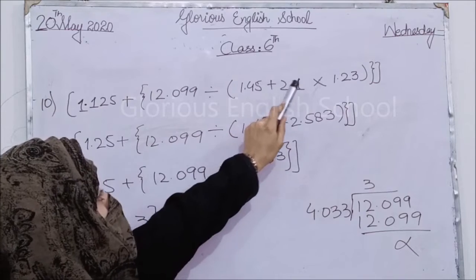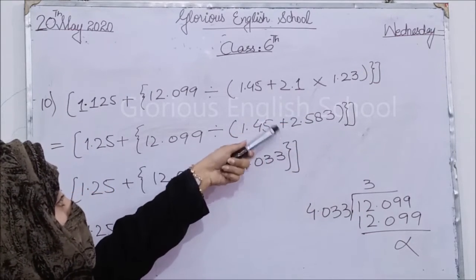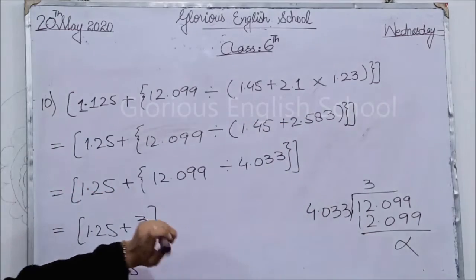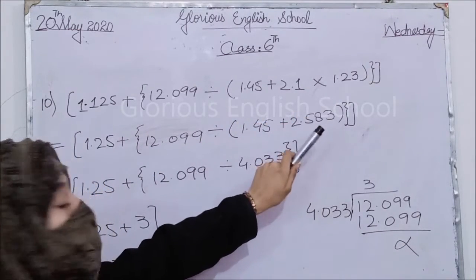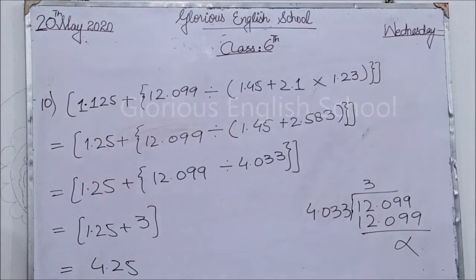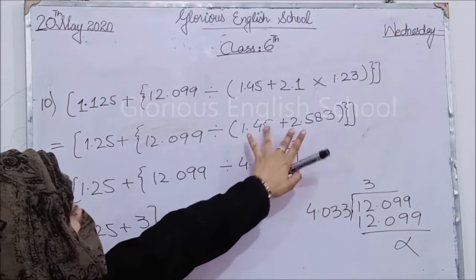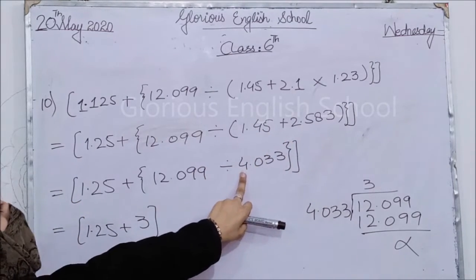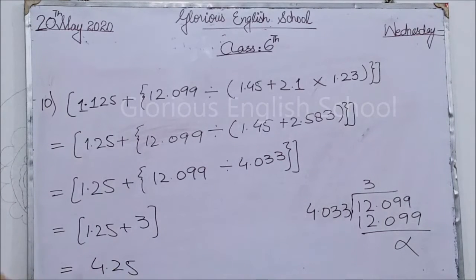Isma pehle ek plus ka sign aur ek multiply ka sign use ho raha hai. BODMAS ke mutabiq pehle multiply ko solve karte hain. Toh jab hum 2.1 ko 1.3 se multiply karenge tab 2.583 aa jaayega. Uske baad, round bracket ke andar sirf plus ka sign hai, so solve karne par 4.033 aa jaayega. Ab round bracket solve ho chuki hai.